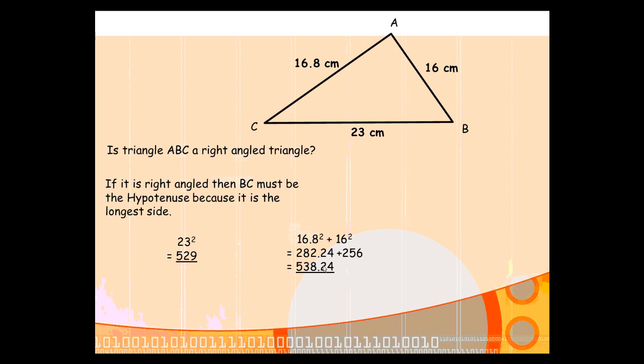Because these two answers do not match up, this triangle cannot be right-angled. If they did match up, you could conclude that it was a right-angled triangle.